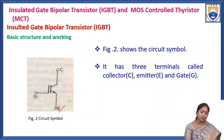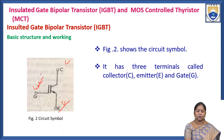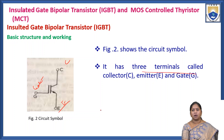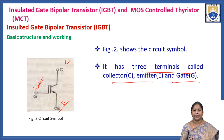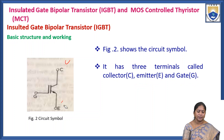Figure 2 shows the circuit symbol of the IGBT. It has three terminals: the emitter, collector, and gate. The IGBT is also a three-terminal device.